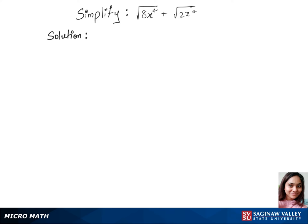Let's simplify this question. We'll first assume all variables represent non-negative real numbers and write our first step by separating the terms. That's root 8 times root of x to the power 4 plus root 2 times root of x to the power 4.